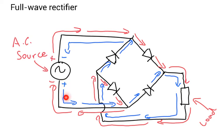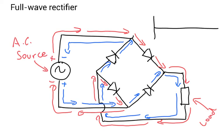So to go through that again: if this side is positive, the current flows through here, it can't flow here, it has to go through here, round through the load, back up here. Then it wants to go to the negative, so it goes through here and down this way. Now, something important to look at is the load — it doesn't matter which way the arrows are pointing, both the blue and the red arrow are pointing the same way. So if I graph the current, you'd have the AC source like this, but the current at the load you'd actually just get a fully rectified output. So all that AC electricity is being converted into DC. Very clever stuff.